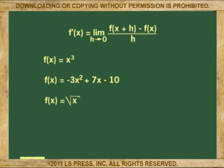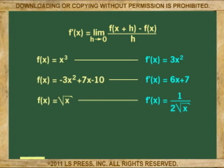So far in this and the previous lesson, we have found the derivative of the function of x equals x cubed. Also, the function of x equals negative 3x squared plus 7x minus 10. And finally, the function of x equals the square root of x. Here are the results for the derivatives for each.